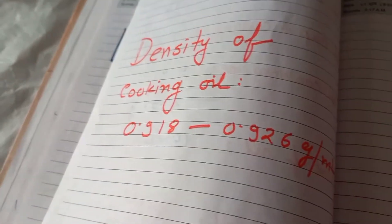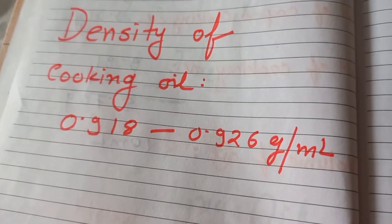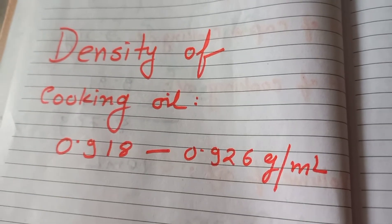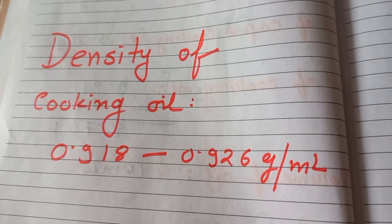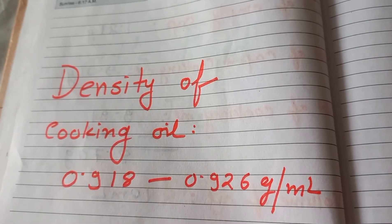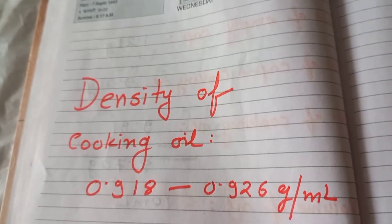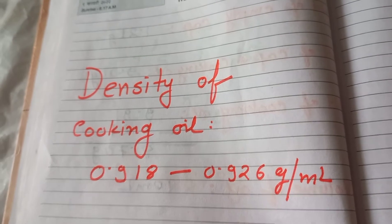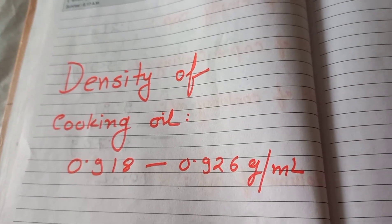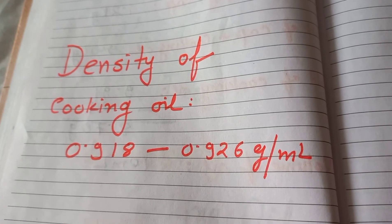I have looked up the density of cooking oil from Google — the reference range is 0.918 to 0.926 grams per ml. Our result is very close to that. There will be some error because we are not using precisely measured volume and this is also a pocket machine, so it's not very precise. But we understand by this process how to find out the density of cooking oil.